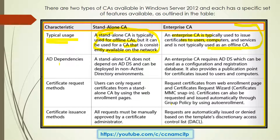Next, Active Directory dependencies. Standalone does not depend on Active Directory Domain Services and can be deployed in a non-Active Directory environment as well. Enterprise certificate authority, on the other hand, requires Active Directory Domain Services, which is used as a configuration and registration database. It also provides publication points for certificates issued to users and computers.